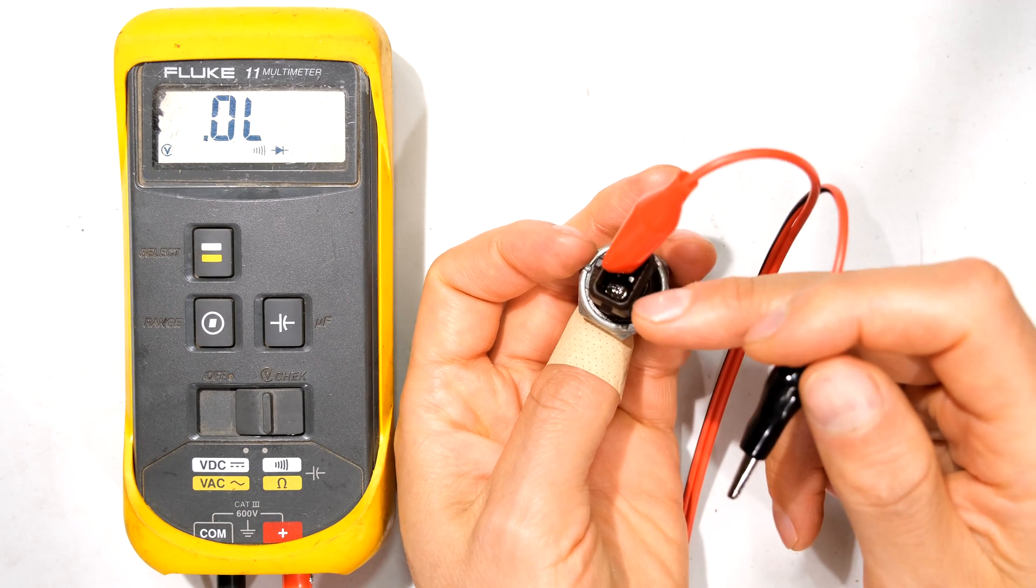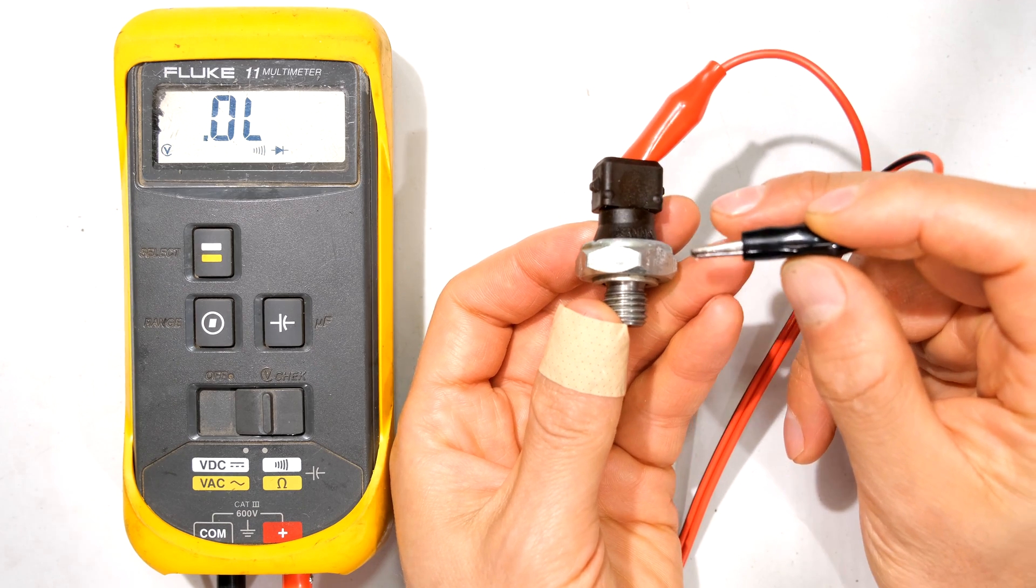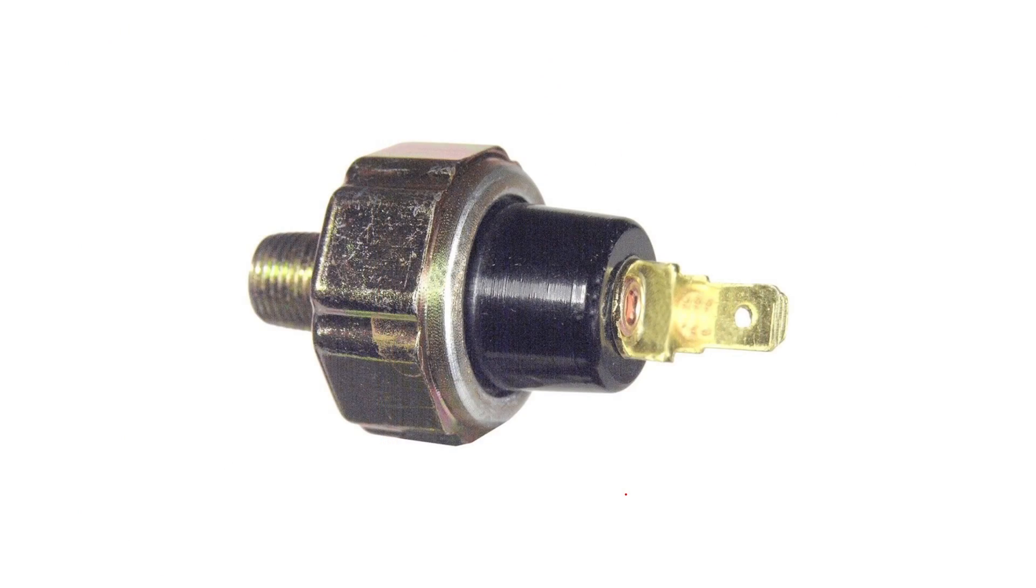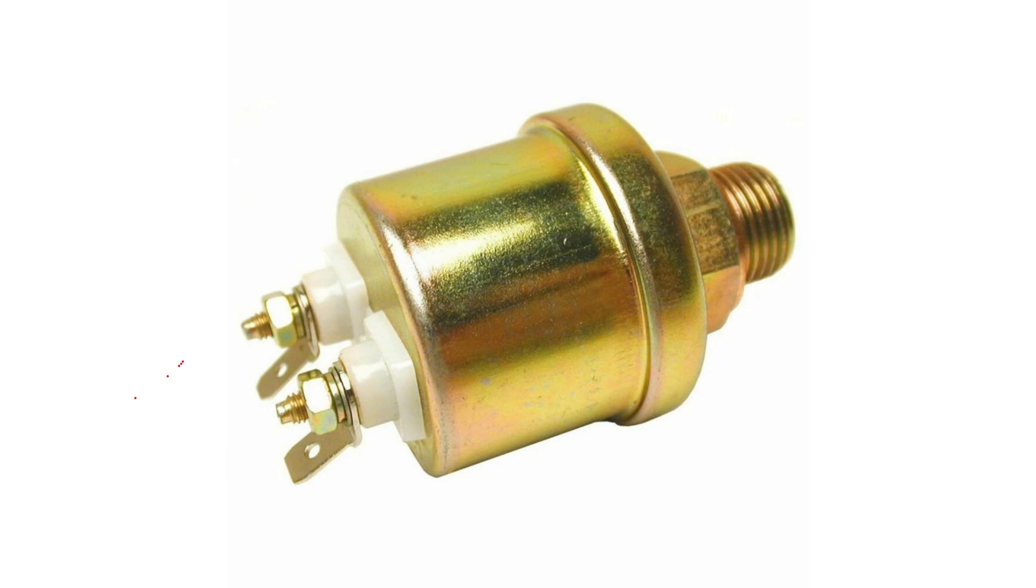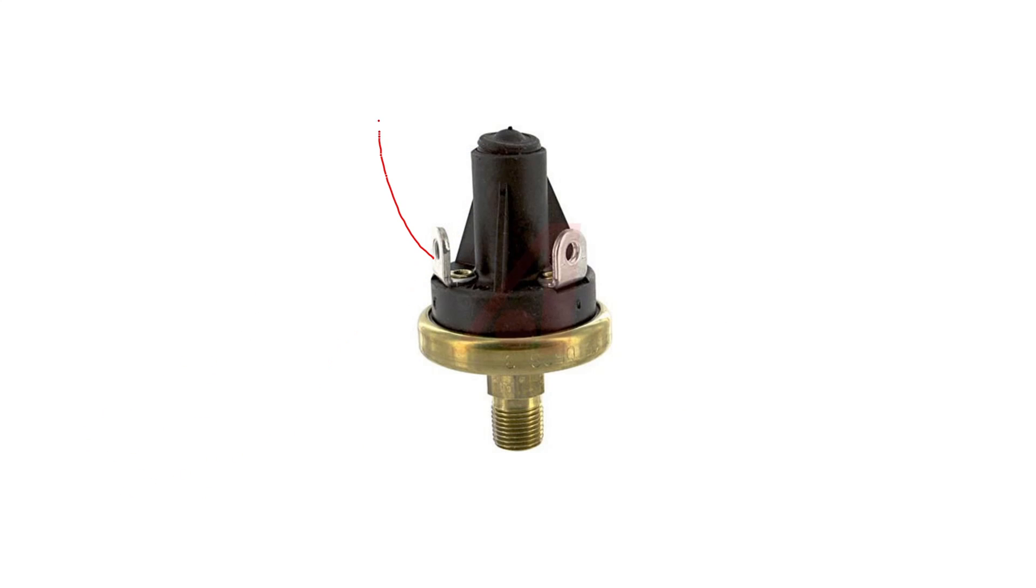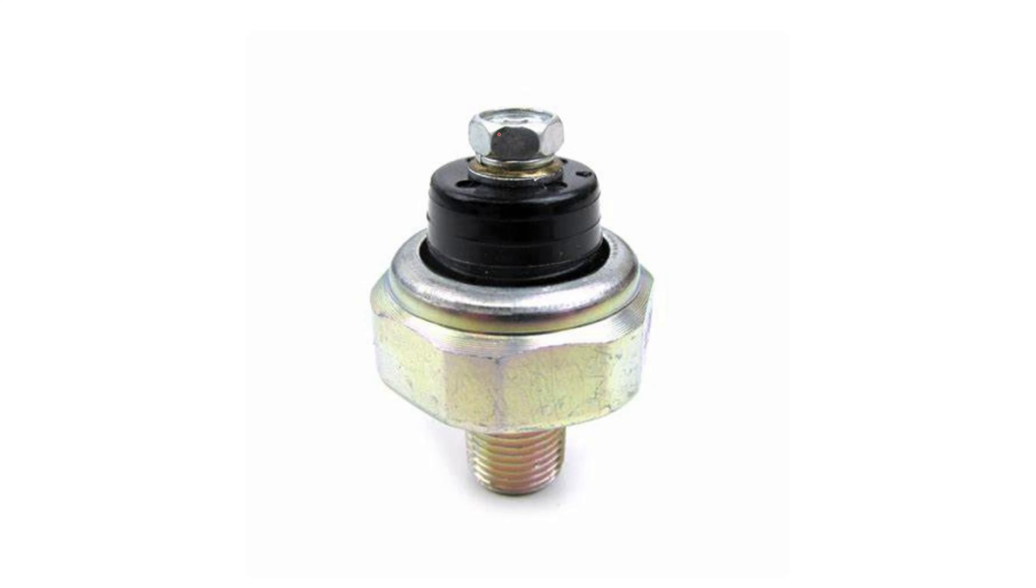Now I've connected the one lead to that terminal. You can see there is only one terminal because the other terminal is actually the body. If your oil pressure switch looks like this you will measure between that lead and the body. If yours looks like this you'll measure between there and there. If yours looks like this with a hexagonal head you'll measure between there and there.